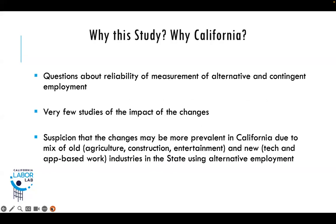Why this study? Why California? The main reasons are that there are questions about the reliability of measurements of alternative and contingent employment, and very few studies look at the impact of these changes on the well-being, including the health, of the workforce. There's also the suspicion that changes written about may be more prevalent in California due to the mix of old industries — agriculture, construction, entertainment — and new tech and app-based work.